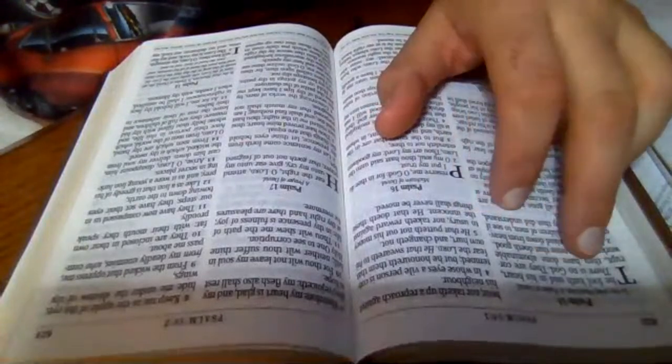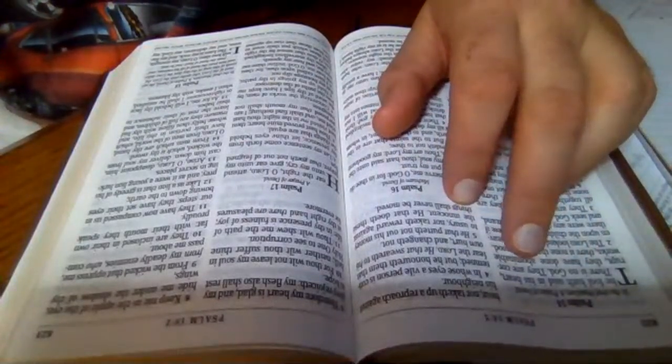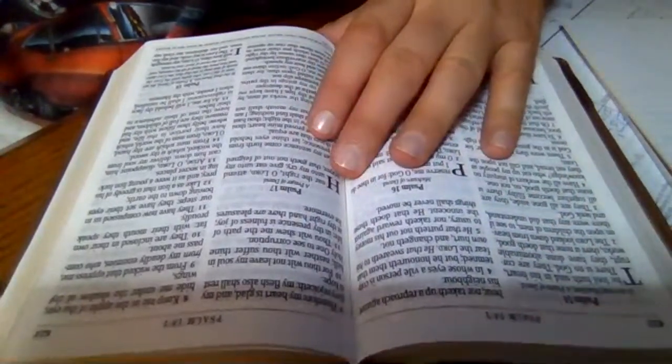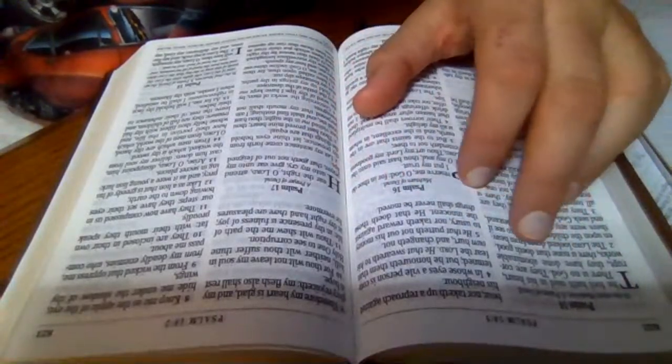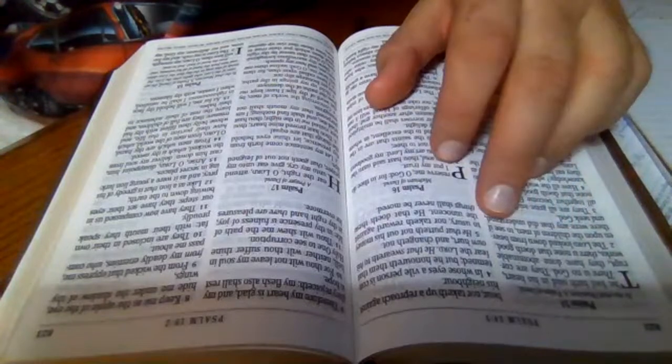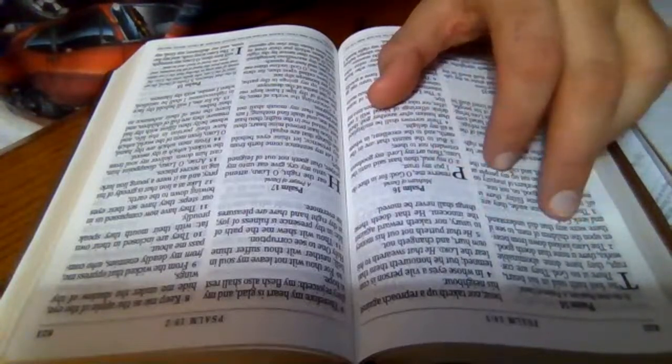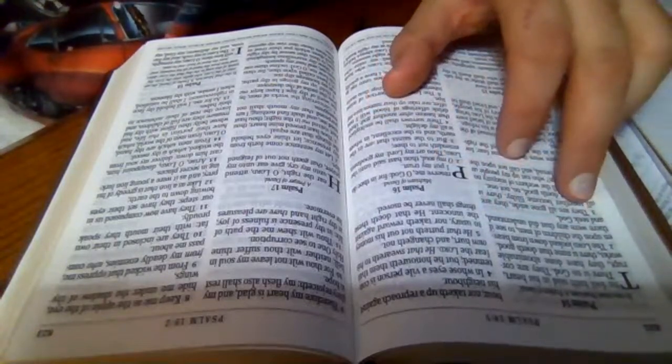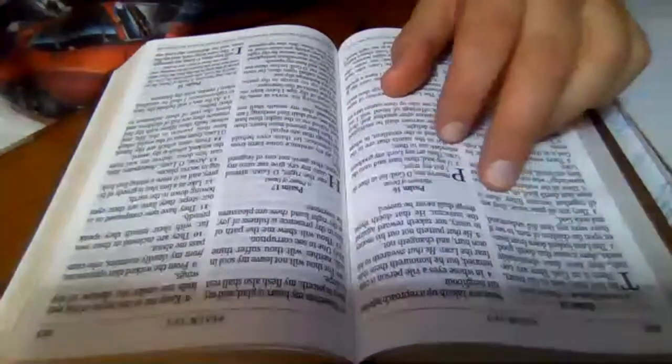The fool hath said in his heart, 'There is no God.' They are corrupt. They have done abominable works. There is none that doeth good. The Lord looked down from heaven upon the children of men to see if there were any that did understand and seek God.